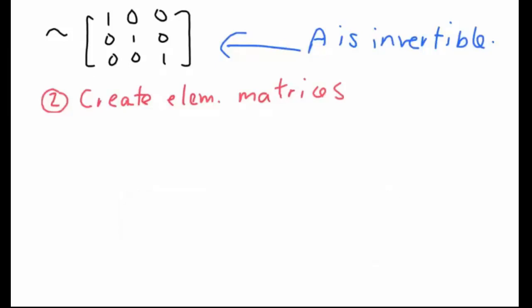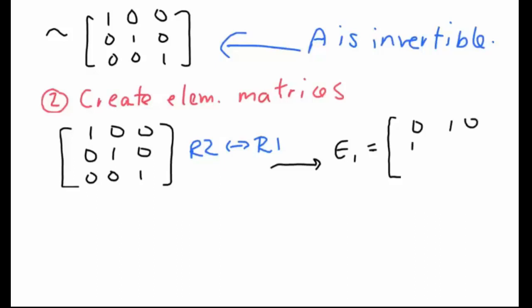For our second step, we're actually going to go ahead and create those elementary matrices using the three elementary row operations we did on the previous slide. First, we'll do the operation row 2 switched with row 1 to get the following elementary matrix. We're going to represent the first elementary row operation we did to A.